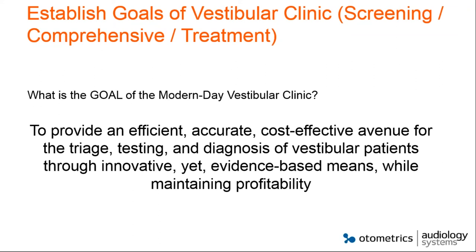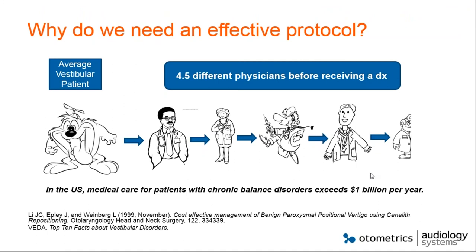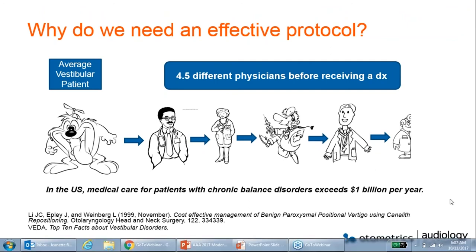Research by Epley and Weinberg shows the path of patients through the U.S. healthcare system. On average, patients see four and a half different physicians before actually receiving a diagnosis — which is concerning, because by the time they visit their last doctor, the condition is no longer acute. Some of the diagnostic tools we have may be complicated to apply at that stage, and the cost of chronic balance disorders exceeds about one billion dollars per year in the U.S.